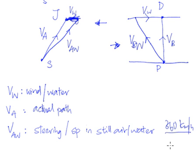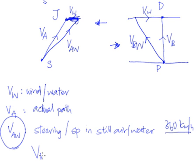One more thing to highlight: this is always the velocity of the aircraft relative to the wind. Never will we be interested in the velocity of the wind relative to the aircraft. We are always interested in the aircraft more than the wind — because we're steering the aeroplane.